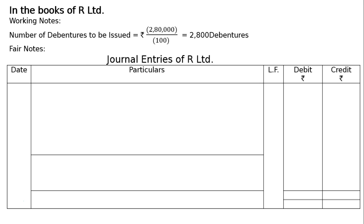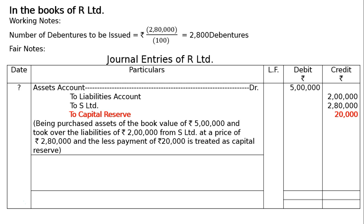Journal entries of R Limited: Assets Account debited Rs. 5 lakh; To Liabilities Account Rs. 2 lakh; To Ace Limited Rs. 2,80,000. Here, we are paying less — we should have paid Rs. 3 lakh but are paying only Rs. 2,80,000. The difference of Rs. 20,000 is attributable to Capital Reserve.